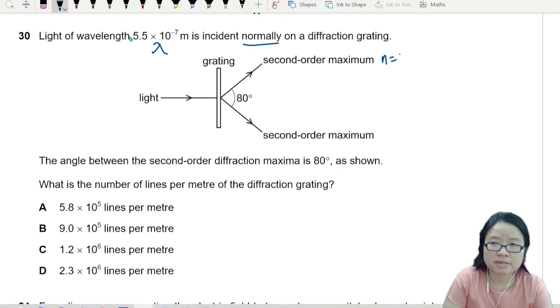So we have the second order maximum, n = 2. And the angle between the second order diffraction maxima is 80 degrees. Haha, they want to trap you already, don't be trapped.